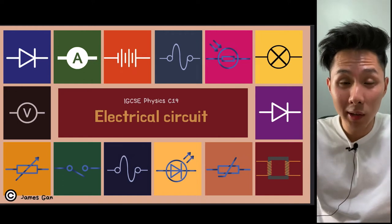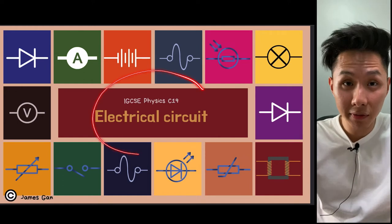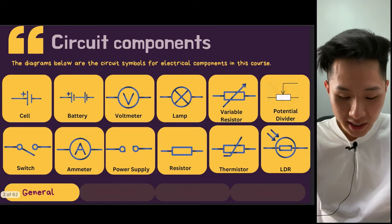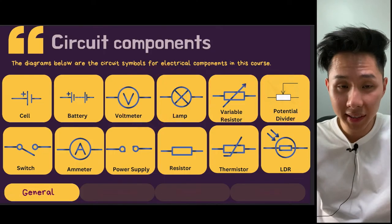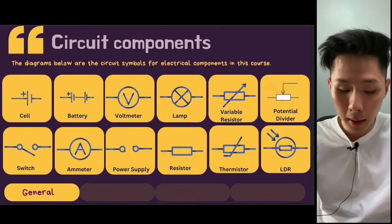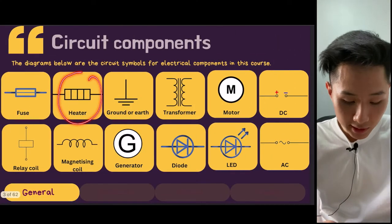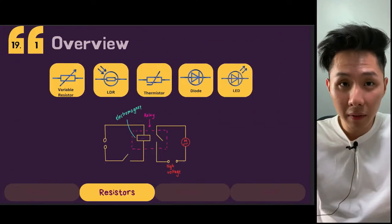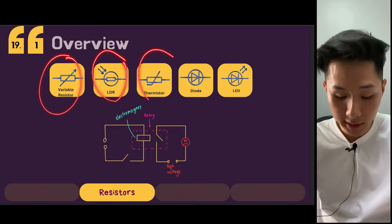Hello everyone, welcome back to this channel. In this video, we're going to look into IGCSE Physics Chapter 19, Electrical Circuits, in which we'll study the different components of an electrical circuit. Some of them we'll go into in detail, some we will not, but it's good to recognize their symbols. In the first section of the video, we're going to look into these five components in detail.